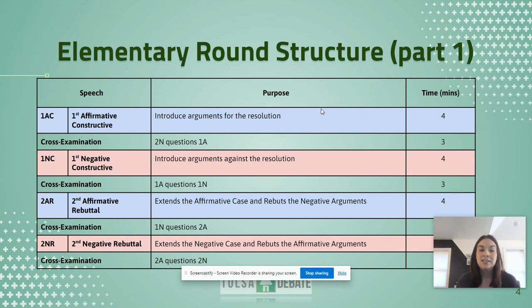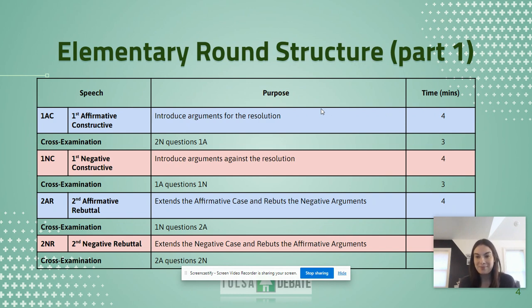We start with the 1AC, the first affirmative constructive, which is a pre-written speech that will introduce arguments for the resolution. The first speaker from the affirmative team has four minutes to get this done, followed by a cross-examination.